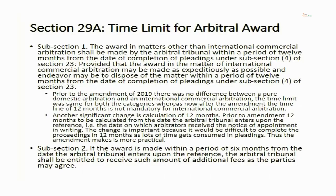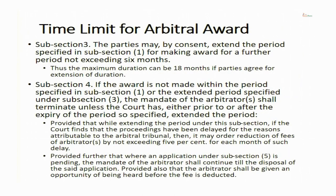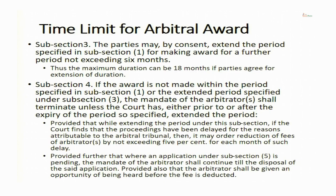Subsection 2 says that if the tribunal is successful in passing the award within 6 months, the arbitral tribunal shall be entitled to receive additional fees as the parties may agree. Subsection 3 says that if the tribunal fails to pass an award in 12 months, parties may extend the duration by 6 months — so the maximum duration becomes 18 months if parties agree to extend. If the tribunal fails to do it in 12 months, parties may agree to extend to a maximum of 18 months.